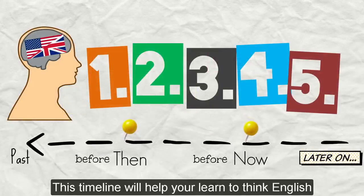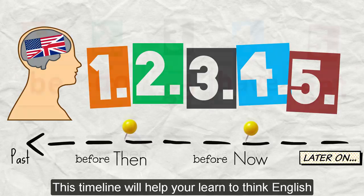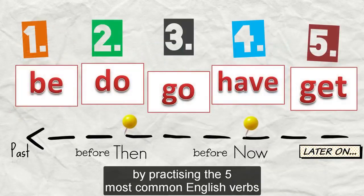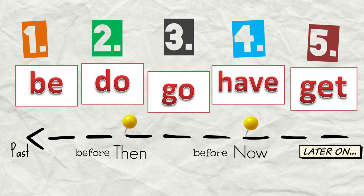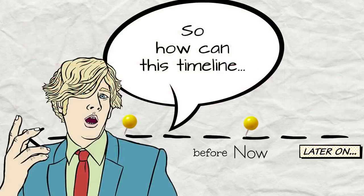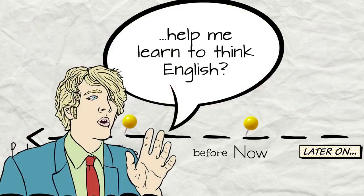This timeline will help you learn to think English by practicing the five most common English verbs: be, do, go, have, get. So how can this timeline help me learn to think English?